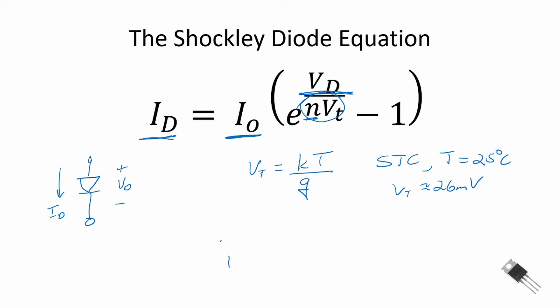Also notice the term N, called the ideality factor. For a monocrystalline photovoltaic panel, I am going to use N equal to 1.2 in our model. For a polycrystalline photovoltaic panel, I am going to utilize N equal to 1.3. There are ways of estimating the ideality factor N based on information from the photovoltaic panel data sheet. Finally, we have the minus one term, which accounts for the fact that at zero volts across the diode, we will have zero current through the diode.